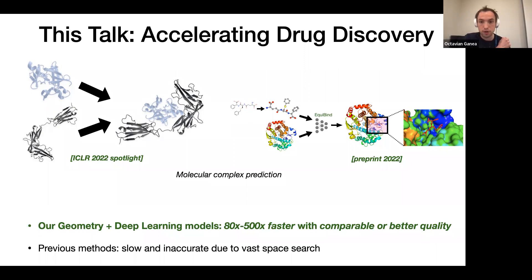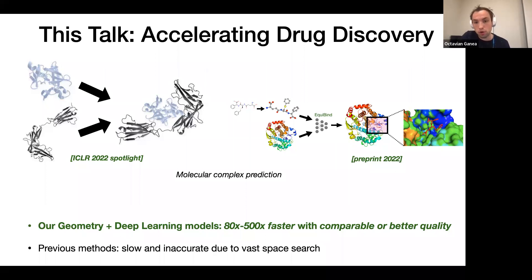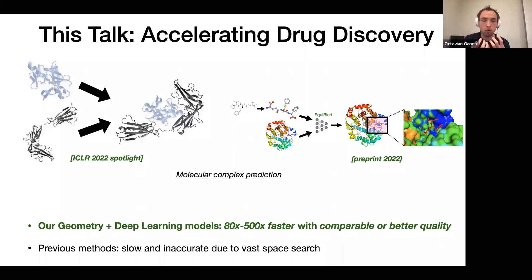I'm going to talk about two papers which are publicly available with source code. One is a spotlight at ICLR, being presented in two weeks, covering rigid protein-protein docking. The second paper is under submission, currently on arXiv as a preprint. Together, they offer a quite generic solution for molecular interactions, showing results for both protein-protein interactions and drug-target binding.